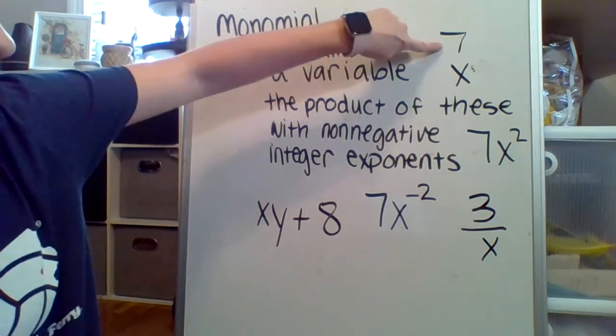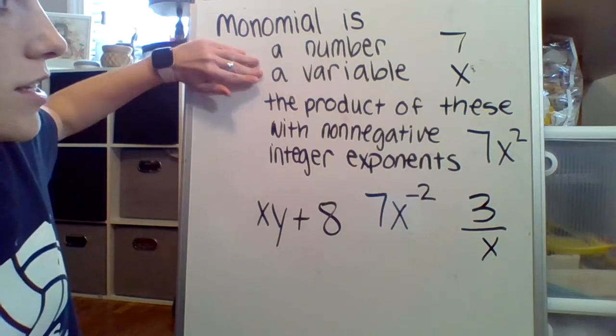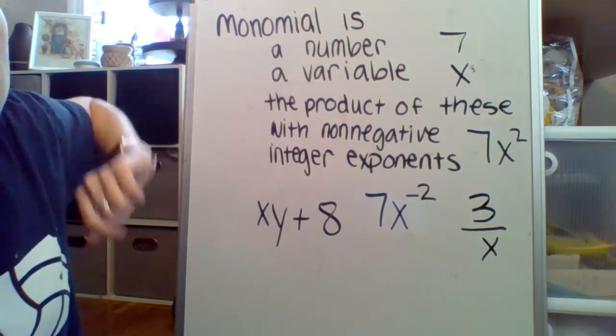It is a number, like the number 7. That is a monomial. It is a variable, x. x is a monomial.